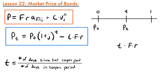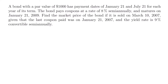Now that we have this formula, let's look at an example. We have a bond with a par value of $1,000 with payment dates of January 21st and July 21st for each year of its term. The bond pays coupons at a rate of 8% semi-annually and matures on January 21st, 2009. Find the market price of the bond if it is sold on March 10th, 2007, given that the last coupon paid was on January 21st, 2007, and the yield rate is 9% convertible semi-annually.